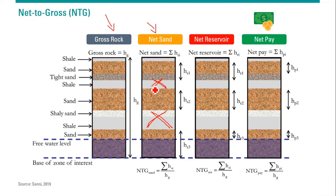And then we have net reservoir. Net reservoir will eliminate the water zone, because the water zone will not contain oil. So we eliminate the water zone, and we also eliminate the shale. So we have net reservoir one, two, and three.